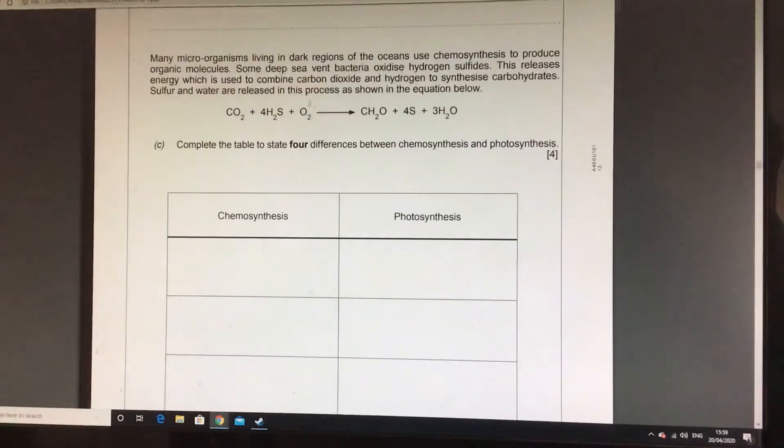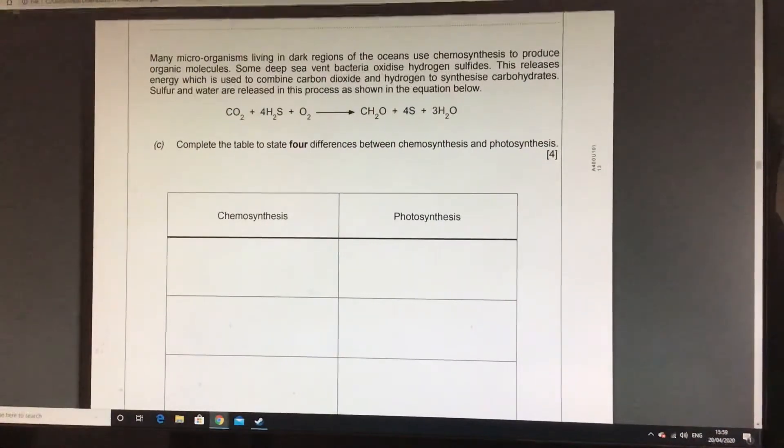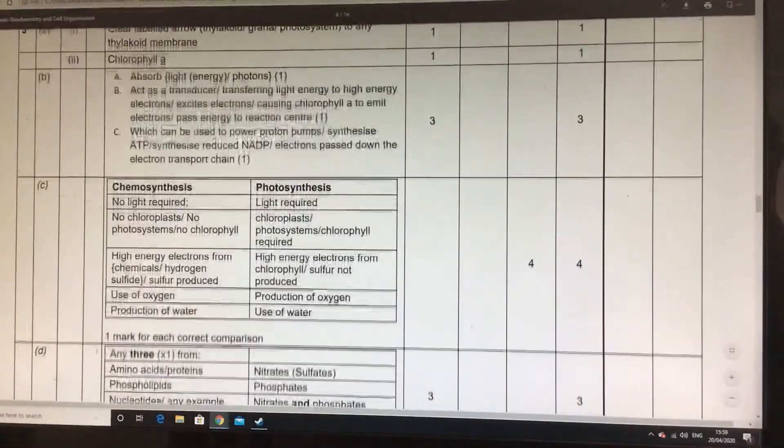hold on a second, oxygen is required for chemosynthesis, where in photosynthesis, oxygen is produced. Also, and it's kind of unwritten somehow, photosynthesis, you need light, whereas here, you don't need light. So have a look at the mark scheme, what it would allow you to do.